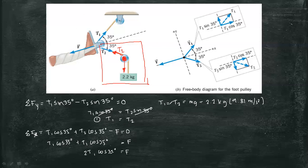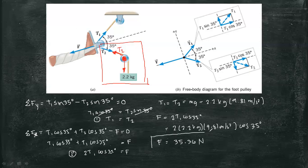We can have T1 equals mass times gravitational pull and applying this in the second equation, we can now solve for F by substituting the value. We have F is equal to 2 T1 times cosine 35 degrees, which gives us 2 times 2.2 kg times 9.81 meter per second squared times cosine 35 degrees. Therefore the force is equal to 35.36 newton. This is our final answer.